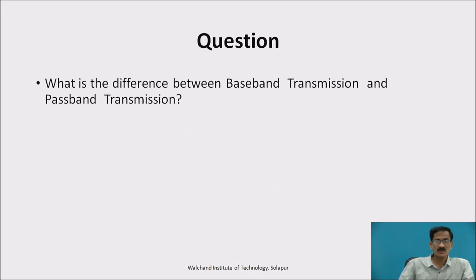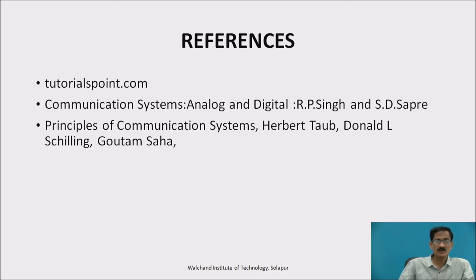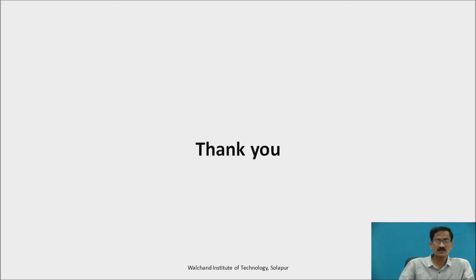What is the difference between baseband transmission and passband transmission? Baseband transmission does not use a modulator or demodulator, whereas passband transmission requires a modulator at the transmitter side and a demodulator at the receiver side. These are the references. Thank you.